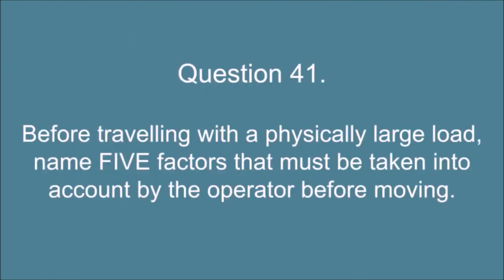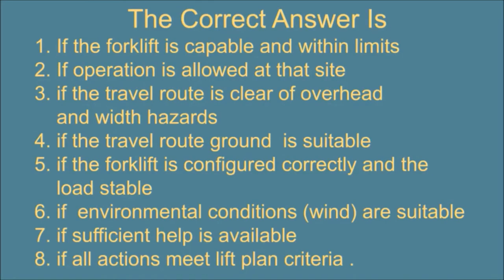Question 41. Before traveling with a physically large load, name five factors that must be taken into account by the operator before moving. The correct answer is: 1. If the forklift is capable and within limits, 2. If operation is allowed at that site, 3. If the travel route is clear of overhead and width hazards, 4. If the travel route ground is suitable, 5. If the forklift is configured correctly and the load stable, 6. If environmental conditions are suitable, 7. If sufficient help is available, 8. If all actions meet lift plan criteria.